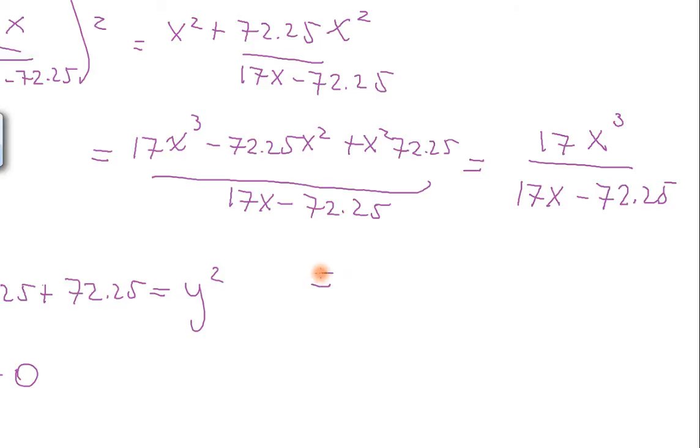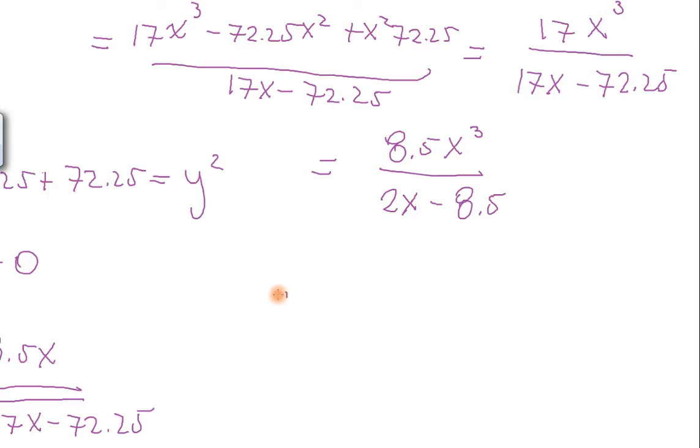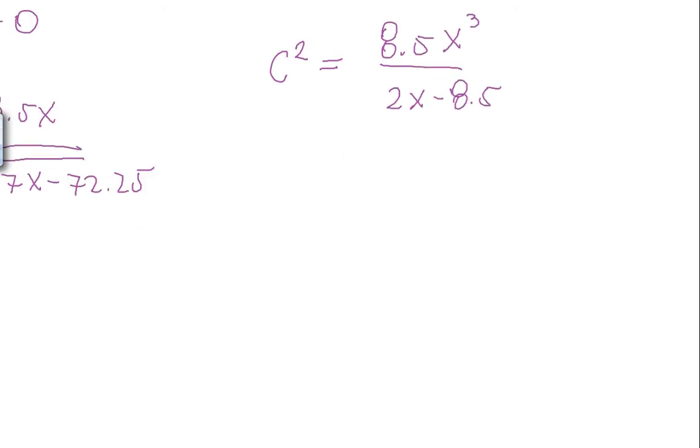If we simplify this, this becomes what? 8.5X cubed divided by 2X minus 8.5. And this is our C of X. C squared, sorry. So C squared equals 8.5X cubed over 2X minus 8.5. Which in terms implies the C of X, crease in terms of X is the square root of 8.5X cubed over 2X minus 8.5.